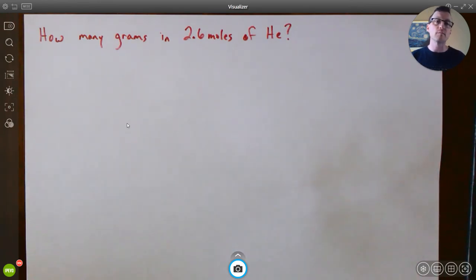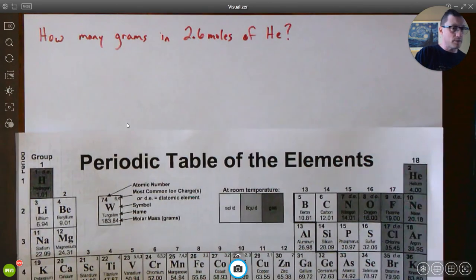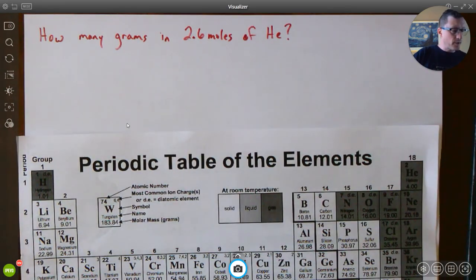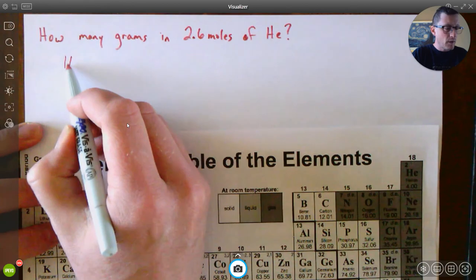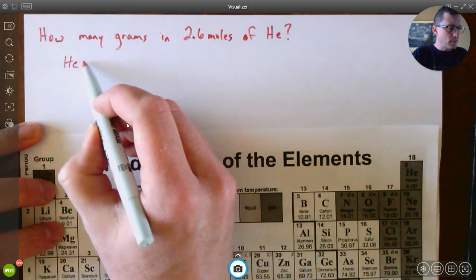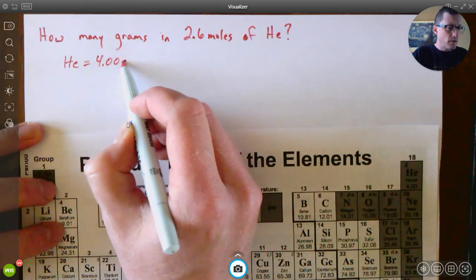This next question is an example of how we would use a molar mass. How many grams are in 2.6 moles of helium He? Okay, so it's the same idea. Now we're going to use the molar mass in a calculation.